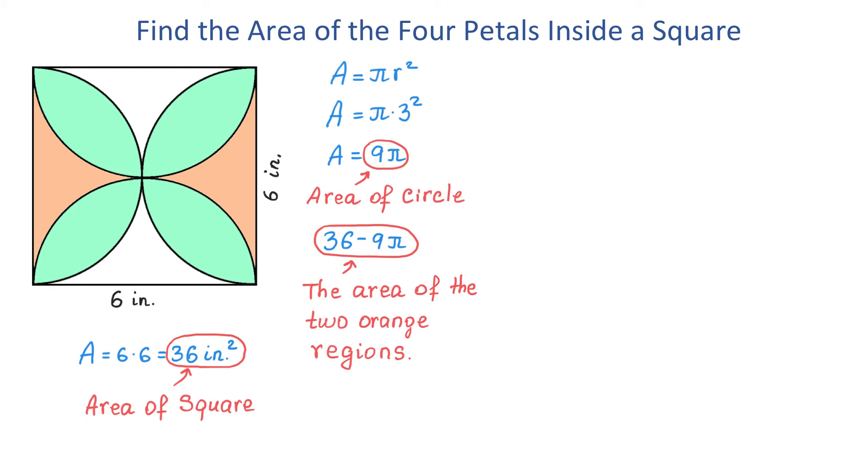Here we have two more regions and let's color them in orange too. We have four orange regions and if the area of two of them is 36 minus 9 pi, then the area of four of them will be 2 times 36 minus 9 pi.